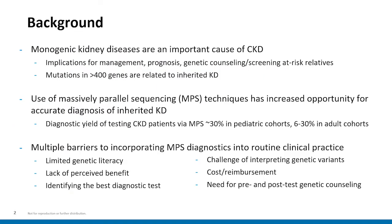We know that there are well over 400 identified genes which cause kidney disease. Massively parallel sequencing techniques have dramatically increased the affordability and accessibility of genetic testing across the board, so we're learning more and more about how important the genetic underpinnings are in overall kidney disease causation. But despite the many implications that genetic testing results can have on prognosis, management, and counseling, there are still barriers to incorporating genetic testing for kidney disease into daily clinical practice. The goal of this paper is to provide guidance and support to physicians to overcome these barriers and increase implementation of genetic testing in routine nephrology practice.